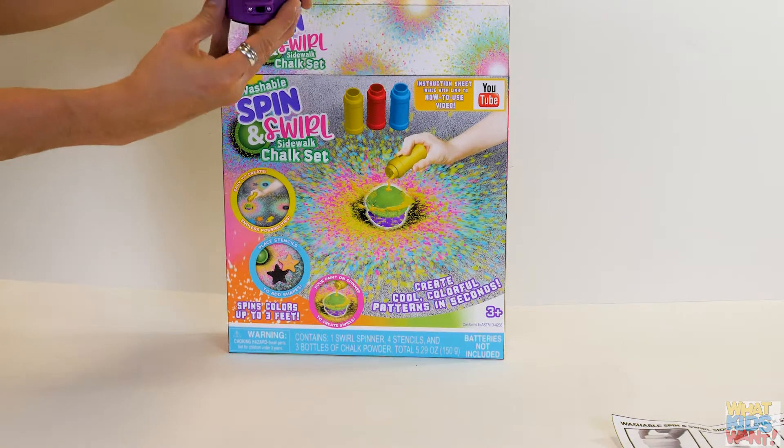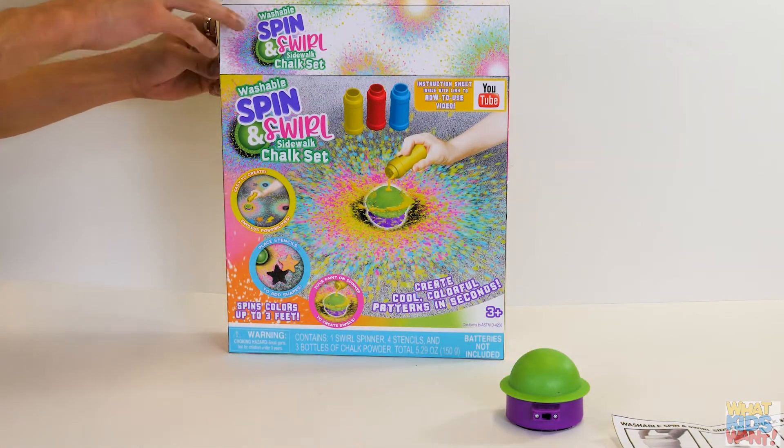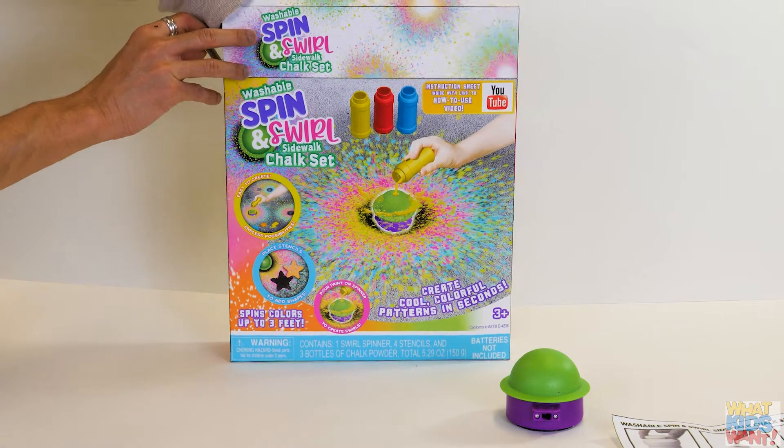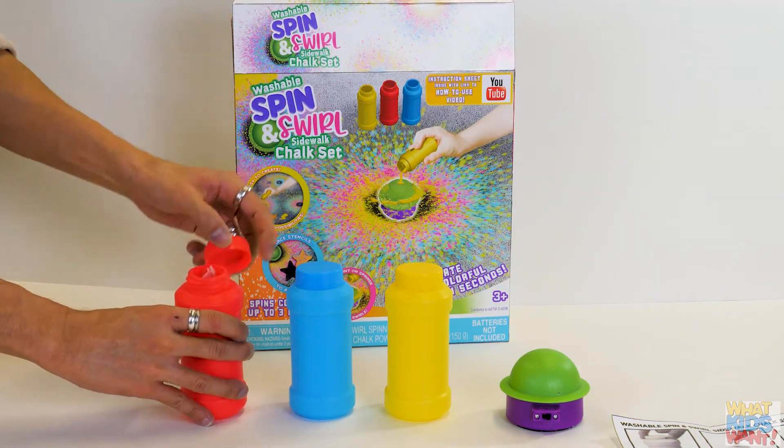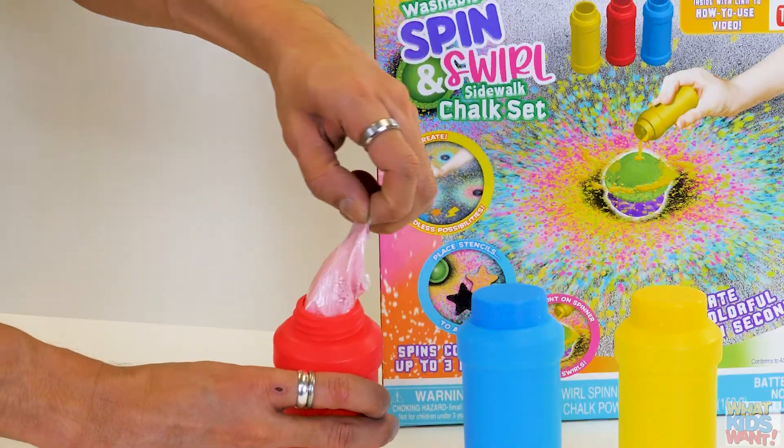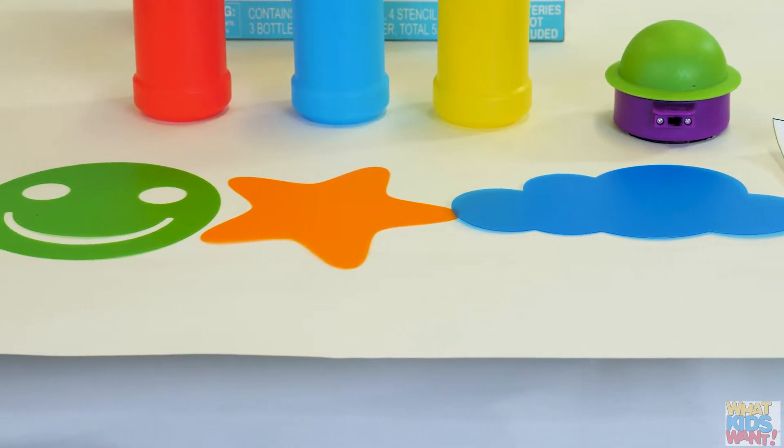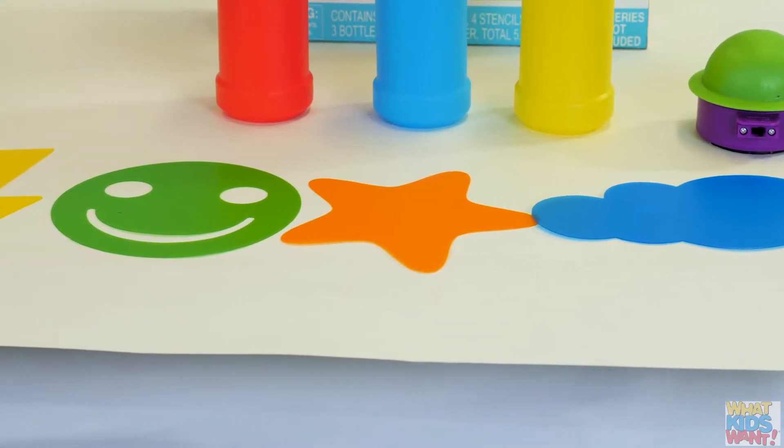The spin and swirl chalk set includes one battery-operated chalk spinner, three bottles of chalk powder, one bottle each of yellow, red, and blue, and four stencils to add shapes to your chalk patterns.